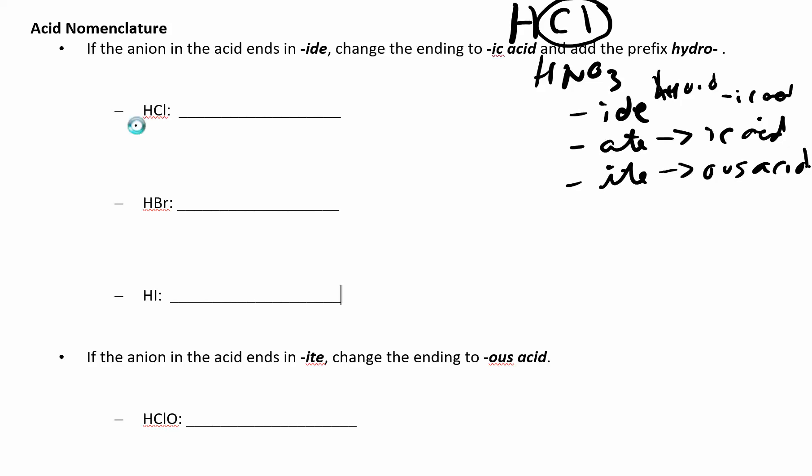HCl - it's an acid. You have hydrogen and then you have chloride, right? That Cl⁻ is a chloride ion. So what you do is drop that -ide, change it to -ic acid, and then add a prefix hydro. So it becomes hydrochloric acid. Does that make sense?